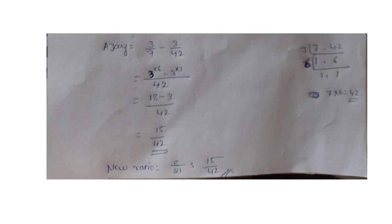Ajay's new ratio: 3/7 − 3/42 = 18/42 − 3/42 = 15/42. So the final new ratio of J to Ajay is 8/21 : 15/42. Calculate accordingly.